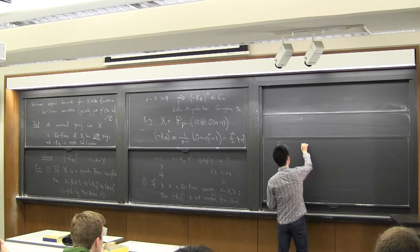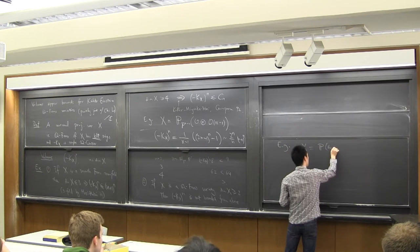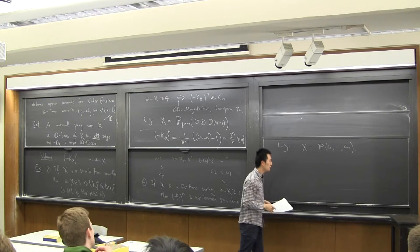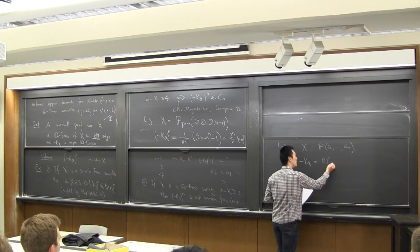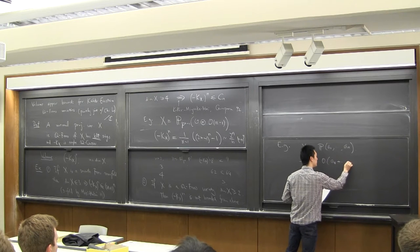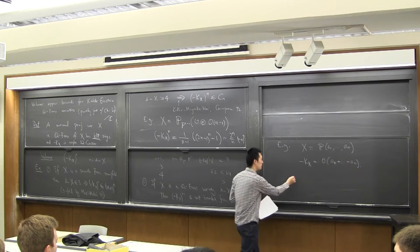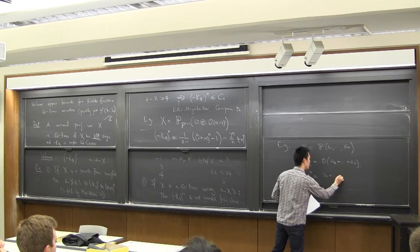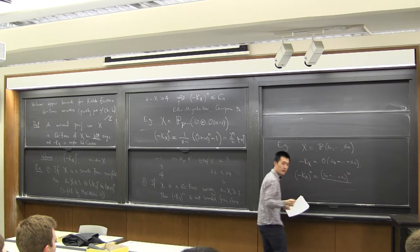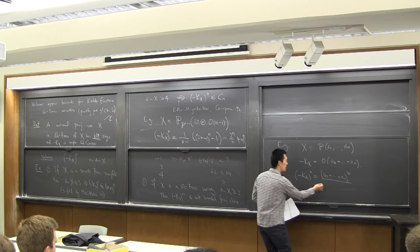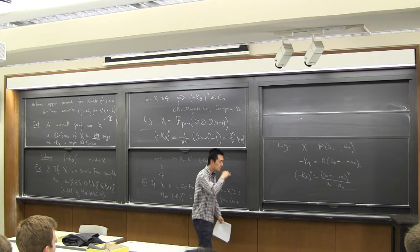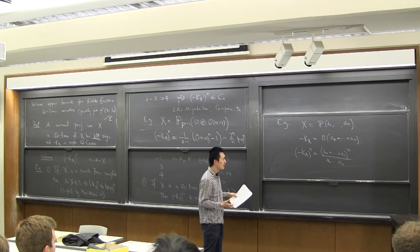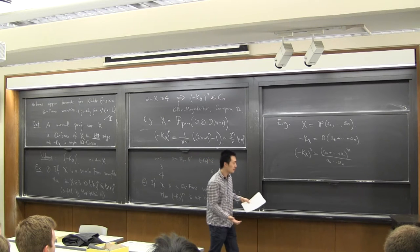A simple example is weighted projective spaces. Let X = P(a_0, …, a_n). Then minus K_X is just O(a_0 + … + a_n). If you compute the volume, it equals (a_0 + … + a_n)^n divided by the product a_0 · … · a_n. This number grows very large for some special choices of the a_i's — simply put some very small and some very large.